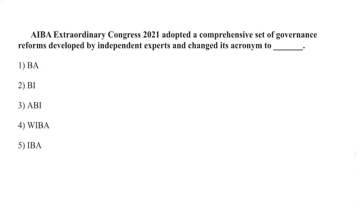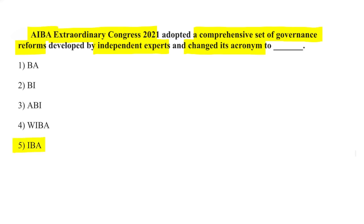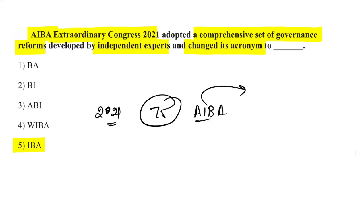AIBA's Extraordinary Congress of 2021 adopted comprehensive governance reforms and changed its acronym to IBA, which stands for International Boxing Association. 2021 also marked the 75th anniversary of AIBA, now renamed IBA.